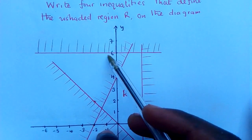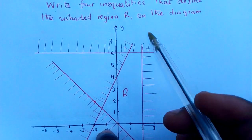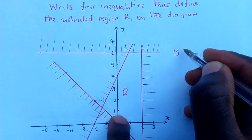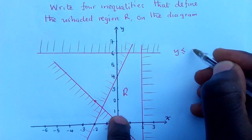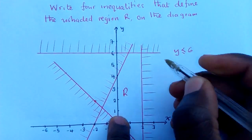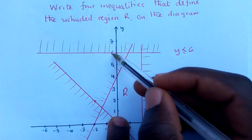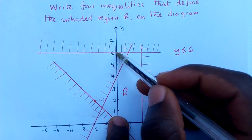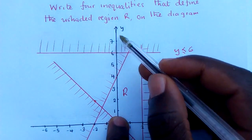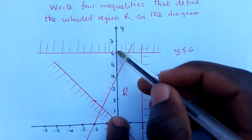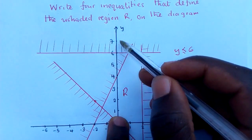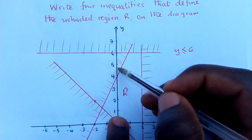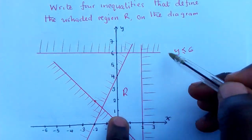For example, this one is cutting on the y-axis only, so we can write it as y is less than or equal to 6. I know it's cutting the y-axis at 6, and the shaded part is greater, so we get the opposite — the unshaded part is less, which means y is less than or equal to 6.